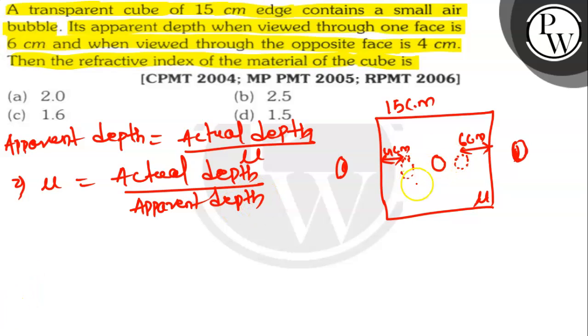We will put the values here. Now suppose from here to here, the distance is x. From here to here, the actual distance is 15-x. So we will put the values over here. Mu is equal to, what is the actual depth here? X upon, what is the apparent depth here? 4. In this side we are measuring. So take this as equation 1.